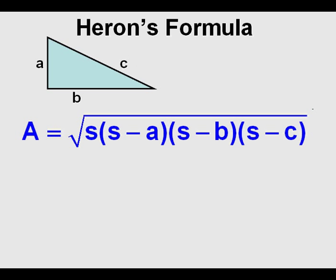But today we'll look at his formula, and this is it. For any triangle with side lengths A, B, and C, the area of that triangle can be calculated by taking the square root of S times quantity S minus A, times quantity S minus B, times quantity S minus C. Don't confuse this with the Pythagorean theorem where C is the hypotenuse. Using Heron's formula, A, B, and C can be any different sides of any triangle.